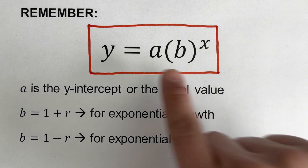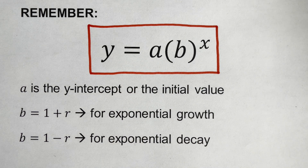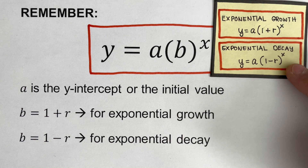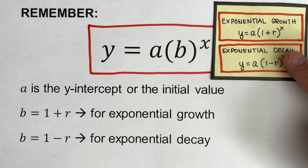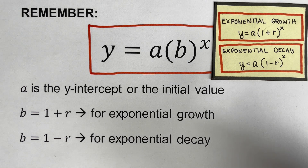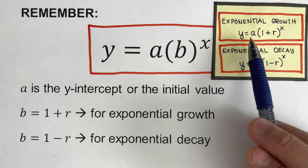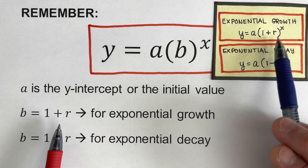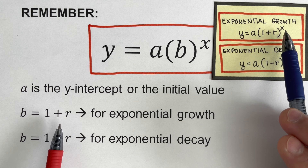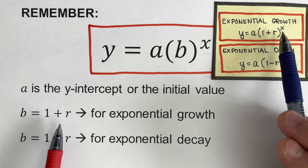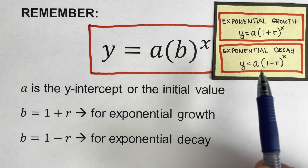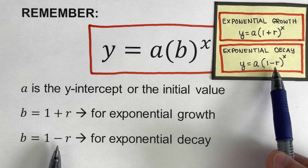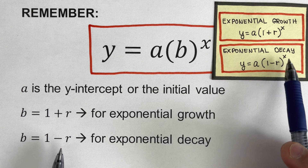This equation can be written in two ways depending on whether it's exponential growth or exponential decay. For exponential growth, that would be y equals a times one plus r raised to the power x. If we have an exponential decay, our equation would be y equals a times one minus r raised to the power x.